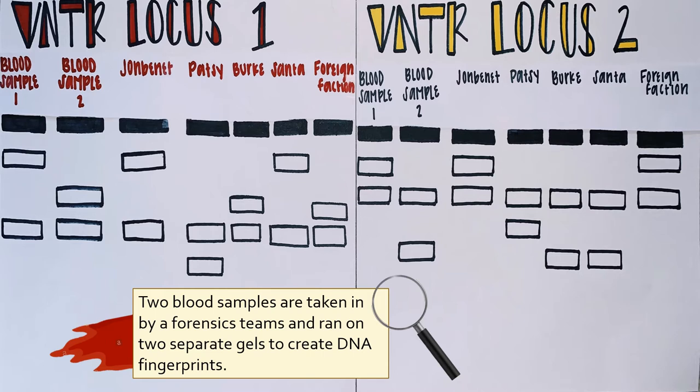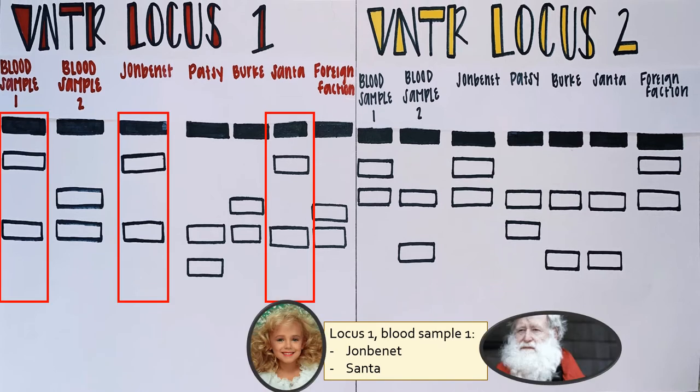Using these loci, we can observe each DNA sample and theoretically determine who committed the murder, since the case remains unsolved. By observing blood sample 1 in our first loci, it is apparent that the blood could belong to our victim JonBenet or Santa, due to the matching banding patterns. We can officially rule out the possibility that the blood sample belonged to Patsy, Berkey, or the foreign faction since the banding patterns do not match.